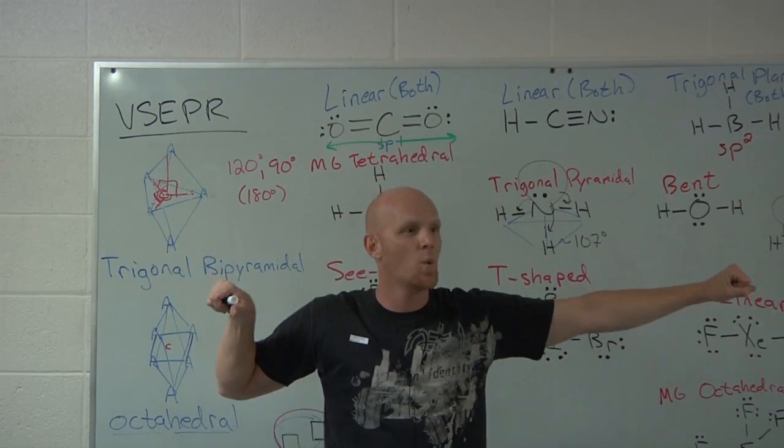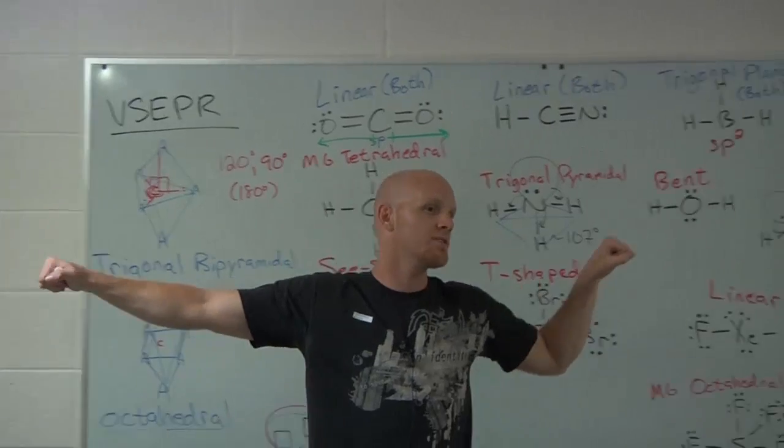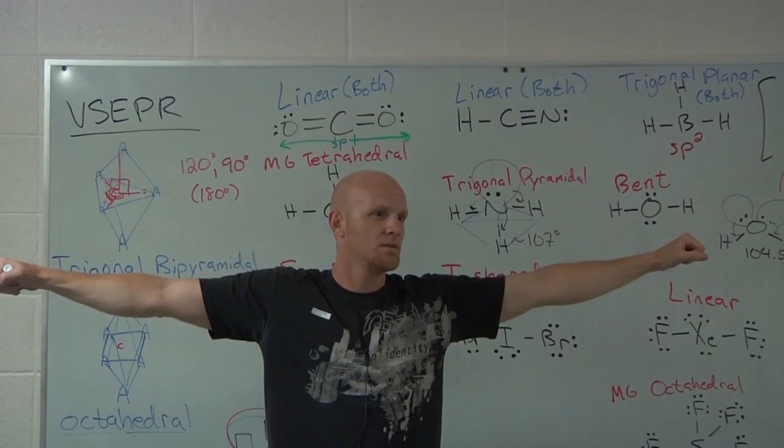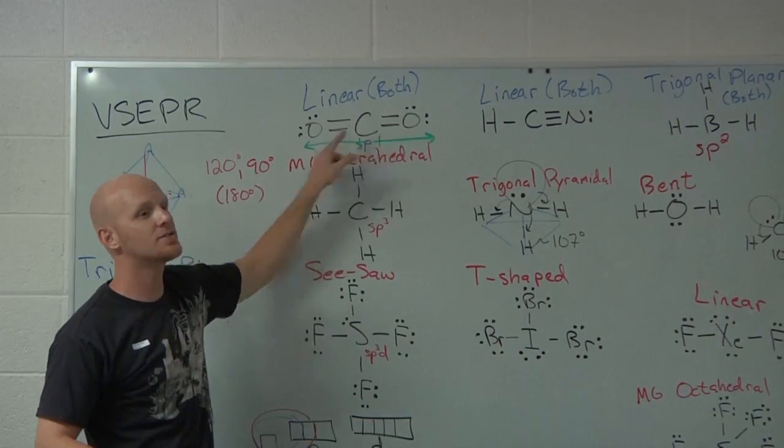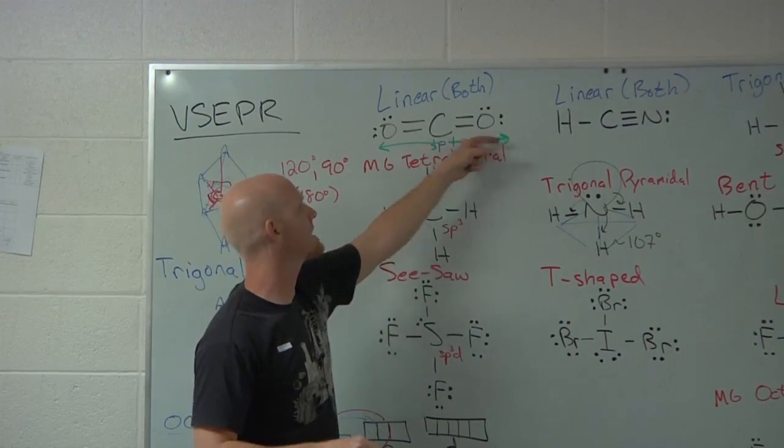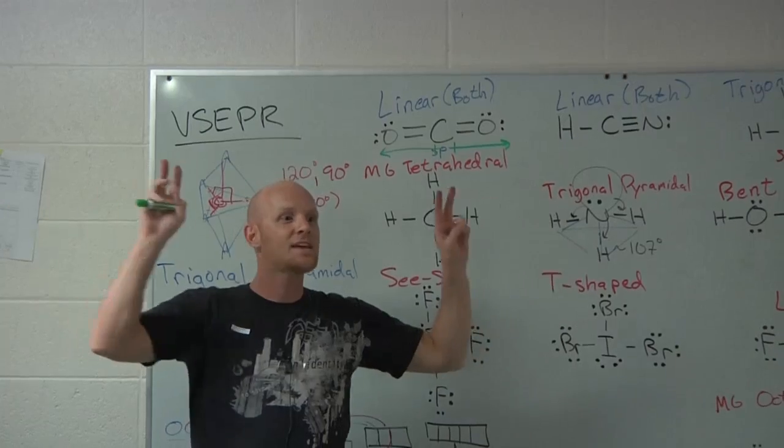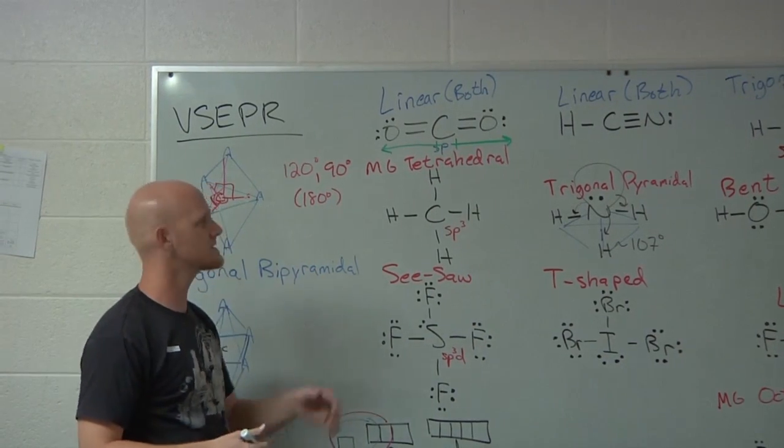And so if I've got one oxygen, so to speak, pulling this way, and one oxygen pulling this way, and they're pulling equally, who wins? A tie. And we say that their bond dipole vectors cancel in this case. They're not really pulling like in a tug of war, but there's a bond dipole here and a bond dipole here. But if they're equal and in opposite directions, they cancel if we're adding them as vectors like in calculus or physics.